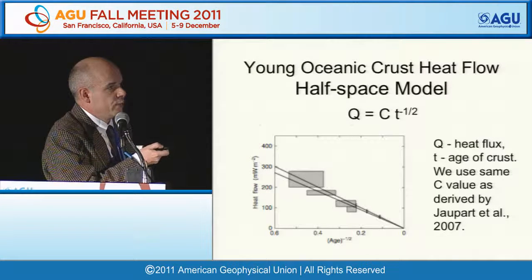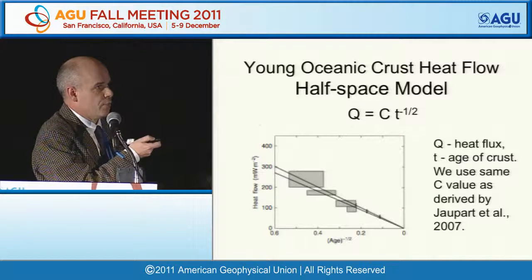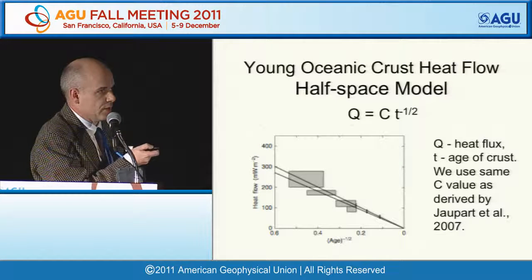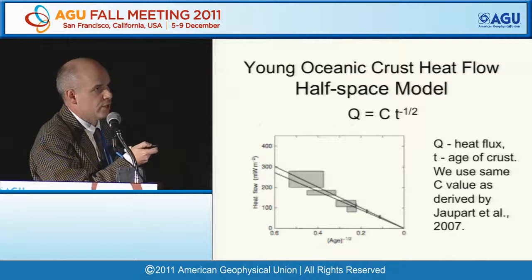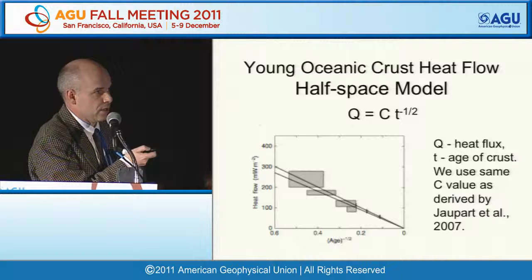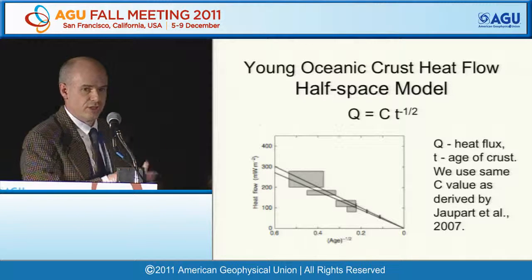For the oceanic model, we follow Claudia Parr et al. On one axis is heat flow, on the other is one over the square root of age. We assume a simple half-space model as a good estimate out to 65 million years, and the selected C value follows Claudia Parr's value, constrained by these lines going through the origin.